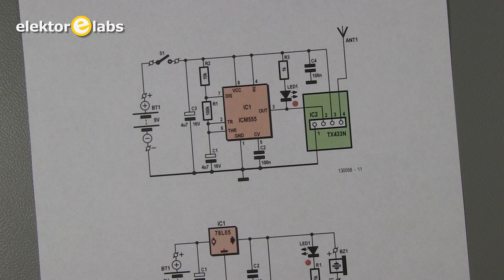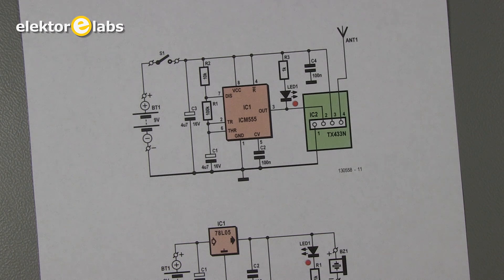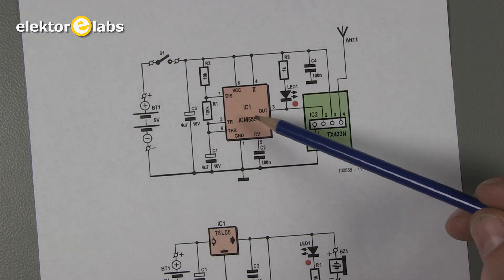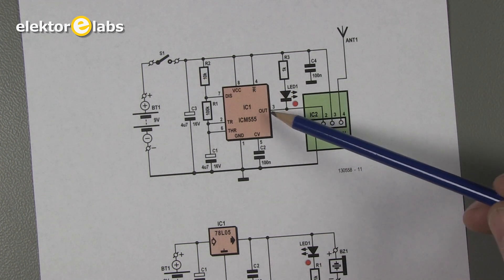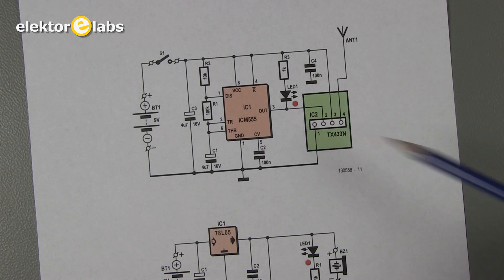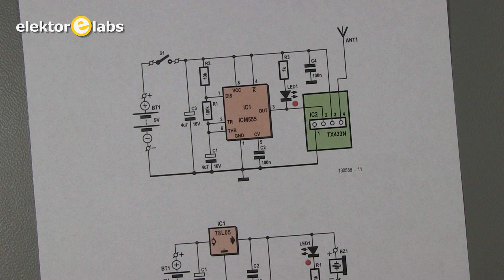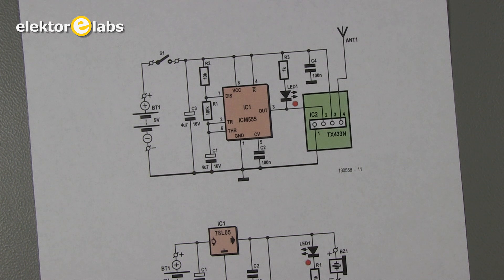The transmitter consists of not much more than a 555 oscillator and transmitter module. When the power switch is closed, the entire circuit is powered and the 555 begins to oscillate at a frequency of about 1 Hz. The output of the 555 is connected to the data input of the transmitter module so that it will be transmitting the carrier in this 1 Hz rhythm.